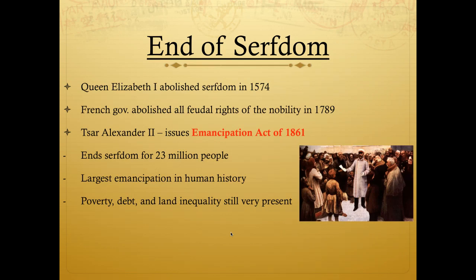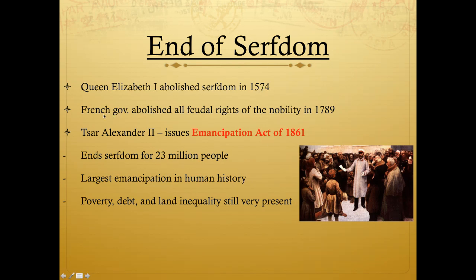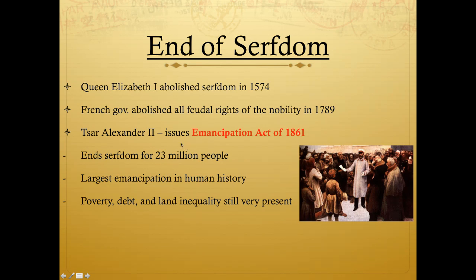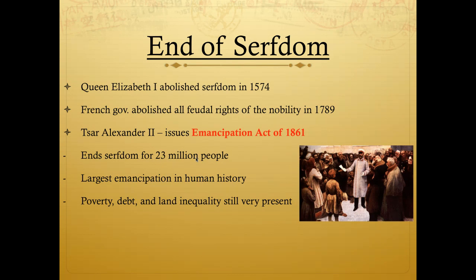The end of serfdom also occurs in this time period, driven by Enlightenment ideas. England had abolished serfdom early — in 1574, before the Enlightenment. In France, serfdom ended because of Enlightenment ideas. Russia didn't abolish serfdom until 1861 — the last place to do so — making it the biggest emancipation in history: 23 million people emancipated. The Enlightenment thus had many positive effects on previously marginalized groups — serfs, slaves, and women.